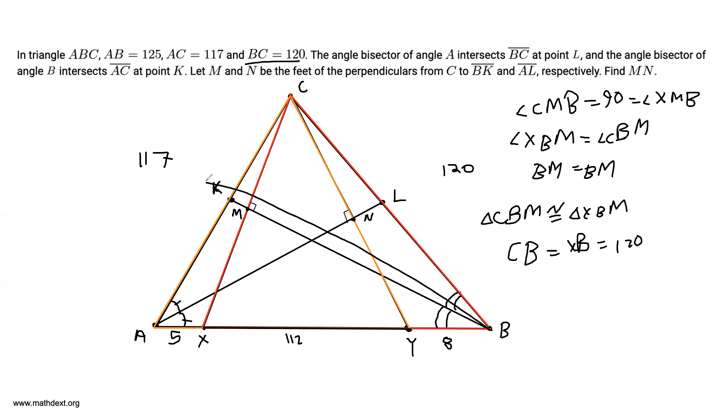And N is the midpoint of CY because we had that this triangle was congruent to this triangle. So M is the midpoint of CX, and we also have that triangle ACN is equal to triangle ANY, meaning CN is equal to NY. So N is the midpoint of CY.